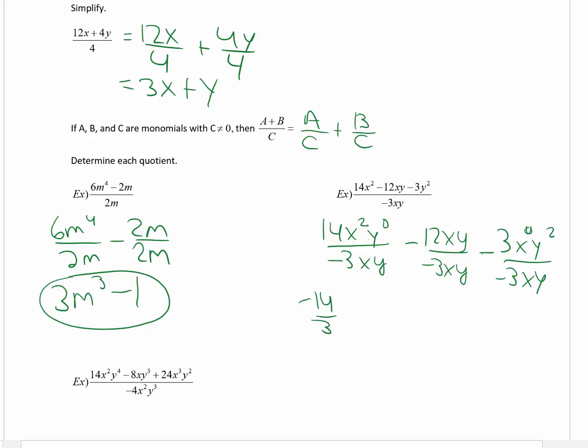So negative fourteen thirds. Dividing the x's you get x to the first. Here it's zero minus one, that is negative one. Negative divided by negative is a positive. Twelve divided by three is four. x divided by x is one, so they divide out. y divided by y, that is one, so they divide out. Negative divided by negative is a positive. Three divided by three is one. x to the zero divided by x to the first, that's x to the negative first. And y squared divided by y to the first is y.